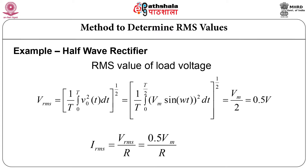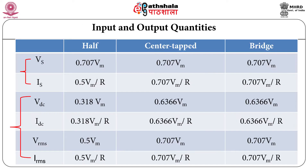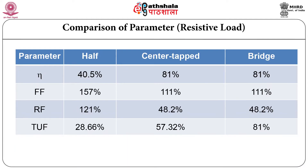First, we will see how to determine the RMS voltage. Taking the example of the half wave rectifier, from the output waveform one can determine the RMS of the load voltage as follows — it is the root mean square. In this way, one can determine the RMS values. Then one can determine the DC value or average value of the output voltage according to this formula. Using these formulas, one can determine Vs, Is — these values are given in this table. One can see that in center tap and bridge rectifiers, the output voltages are higher than in the half wave rectifier.